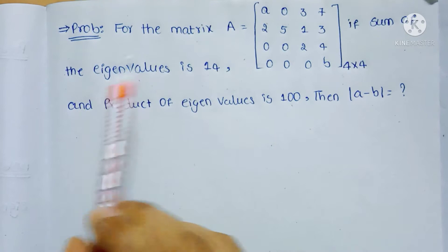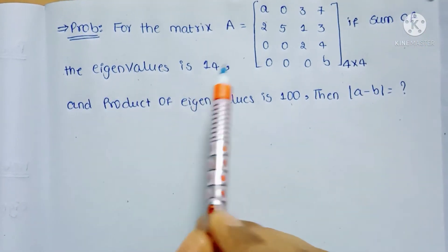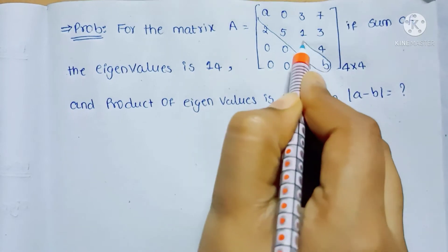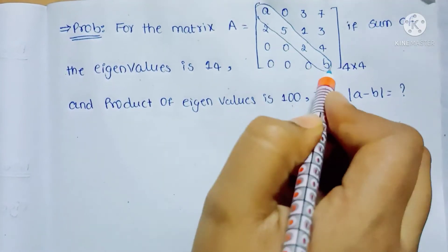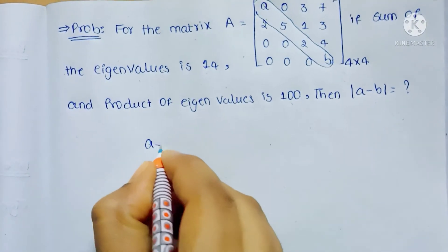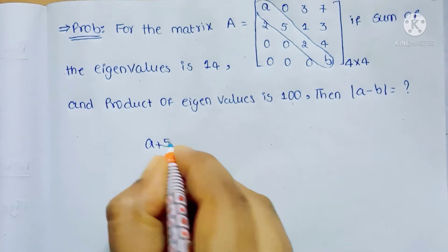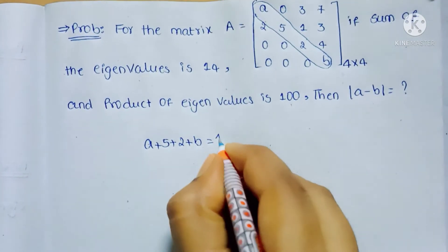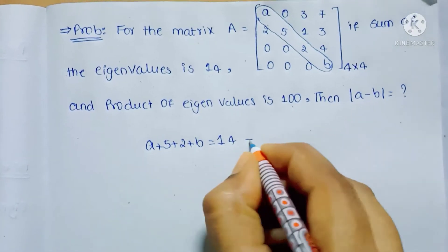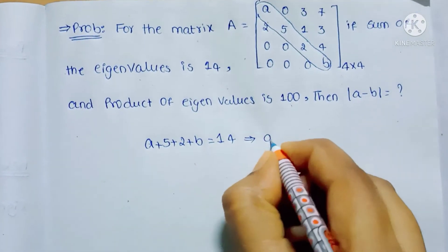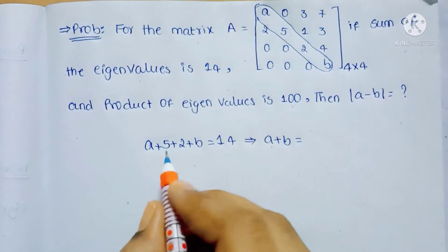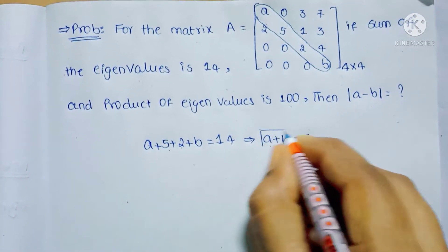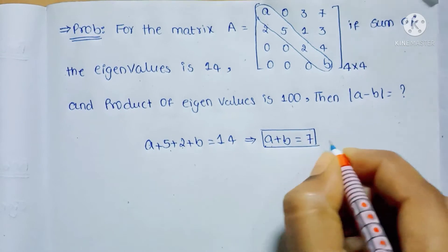If you recall the properties of eigenvalues, the sum of the eigenvalues is equal to the trace of the matrix. If you see the trace of this matrix: A plus 5 plus 2 plus B equals 14. From here we can write A plus B equals 14 minus 7, which gives us 7. So we get one equation: A plus B equals 7.